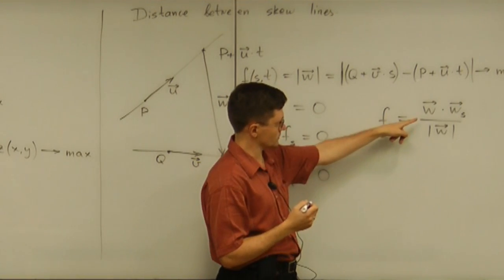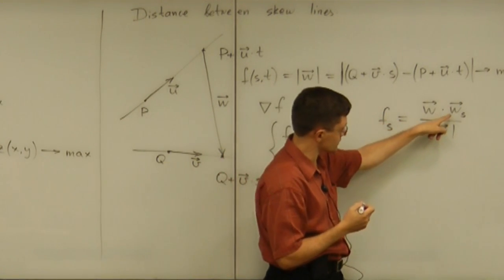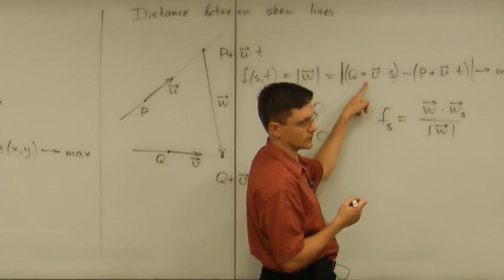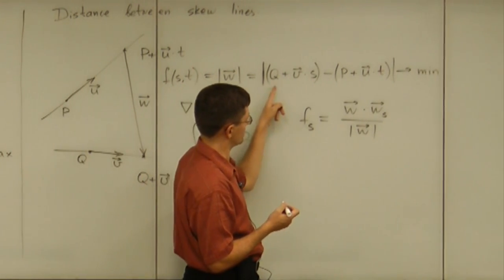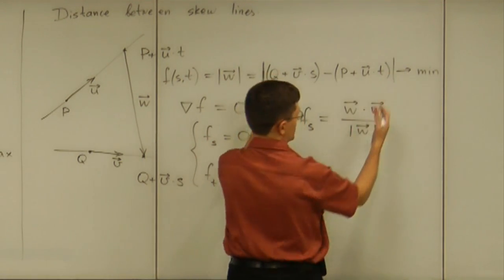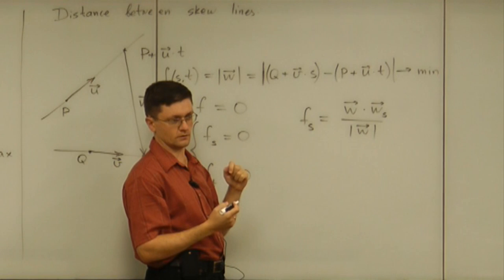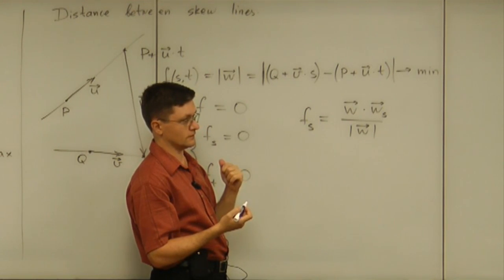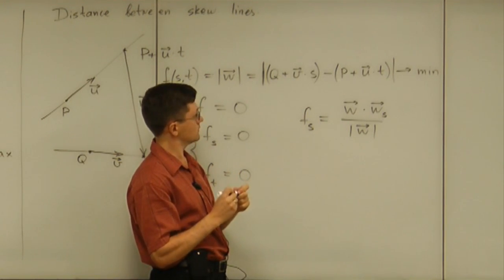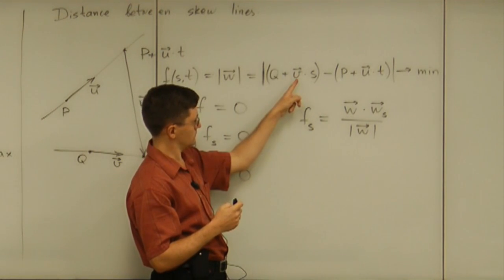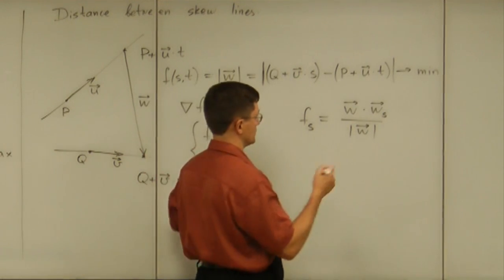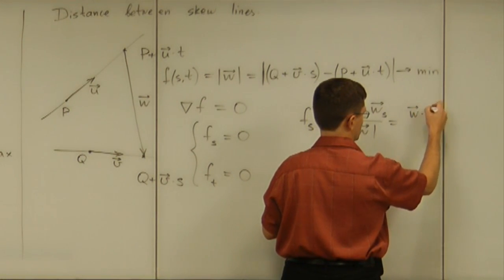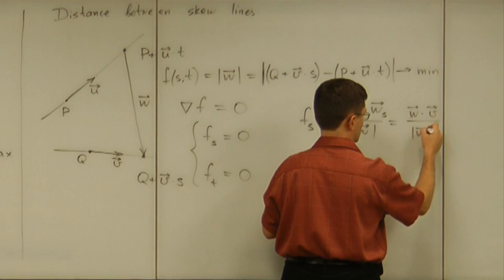And the numerator becomes w itself dot producted with partial of w with respect to s. So, that is expression in terms of w. And the only curious thing is that partial of w with respect to s. So, what is that? Well, if you look at this formula for the w, what do you think the partial of that? Well, the inside of the absolute value should be with respect to s. It should be v. Right? So, that vector is actually v. And what we have here is w dot v divided by the magnitude of w.